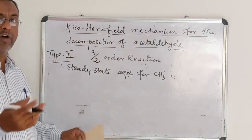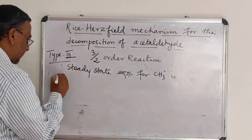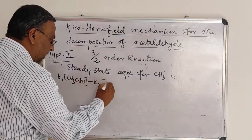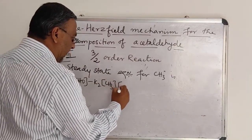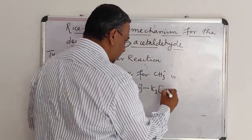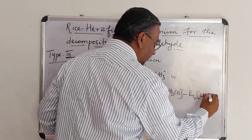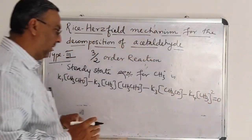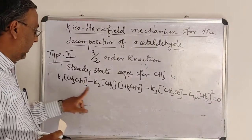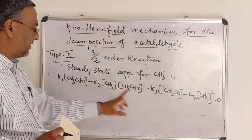The rate of formation is represented by a positive sign and the rate of decomposition by a negative sign. Therefore, I can write the steady-state equation as: K1·[CH3CHO] minus K2·[CH3•][CH3CHO] minus K3·[CH3•][CO] minus K4·[CH3•]² equals zero. In the first step, methyl radicals are generated; in all the other three steps, methyl radicals are consumed — they undergo combination, so they are represented by a minus sign.